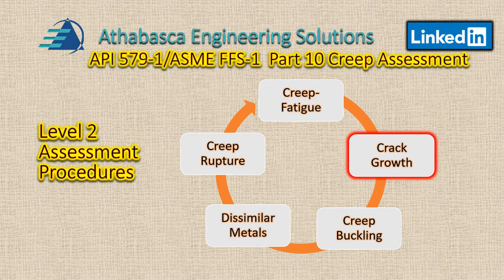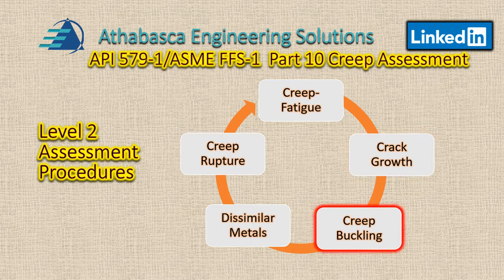CREEP crack growth refers to components that are subject to either a steady-state condition or cyclic operation in the CREEP range, which may contain crack-like flaws. CREEP buckling refers to the time at which a component in the CREEP range may be subject to structural instability, meaning it could collapse due to a compressive stress field.